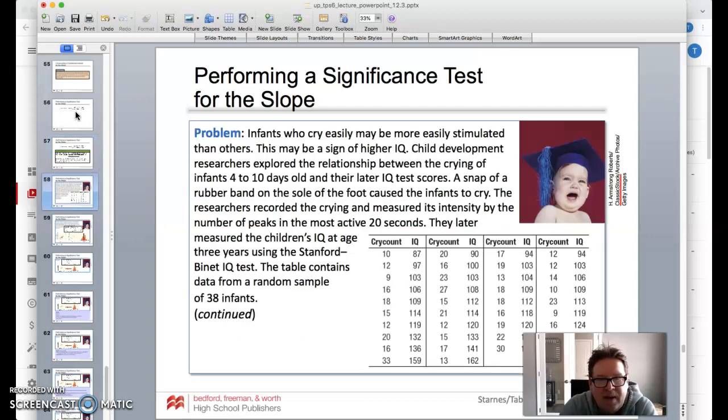So let's take a look at a problem here. Infants who cry easily may be more easily stimulated than others, and this may be a sign of higher IQ. Child development researchers explored the relationship between crying of infants 4 to 10 days old and their later IQ test scores. A snap of a rubber band on the sole of the foot caused the infants to cry. Sounds kind of mean, but they'll be all right. The researchers recorded the crying and measured its intensity by the number of peaks in the most active 20 seconds. They later measured the children's IQ at age 3 using the Stanford-Binet, that's the one that's usually used for IQ tests, most reliable. The table contains data from a random sample of 38 infants.